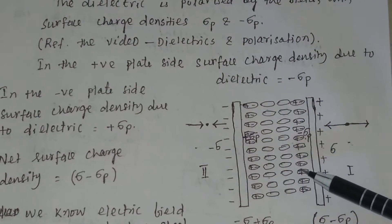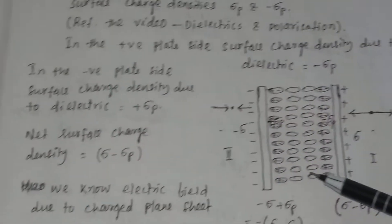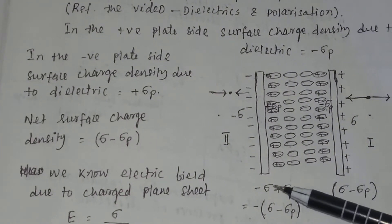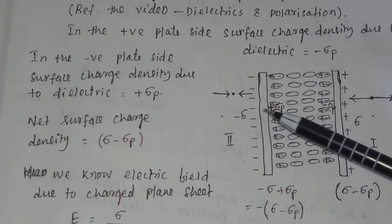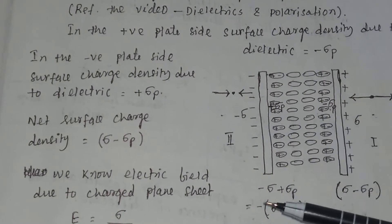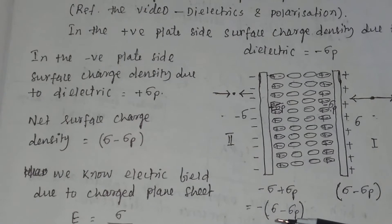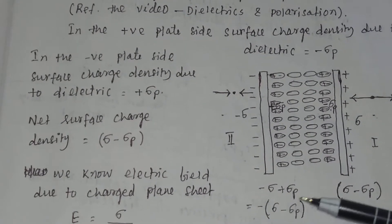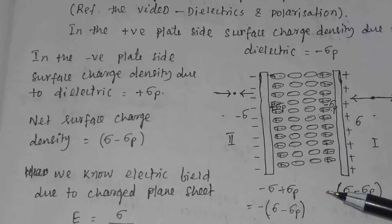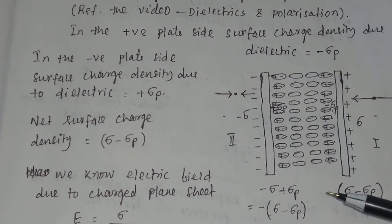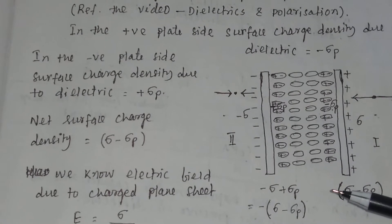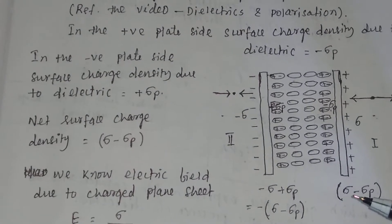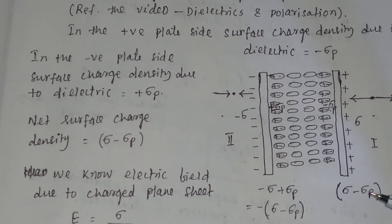The net surface density of charge will be sigma minus sigma p on one side, and on the other side it will be minus sigma plus sigma p, which equals minus of sigma minus sigma p. The plus and minus here gives the direction of the field, but the magnitude of the net surface density of charge is sigma minus sigma p.